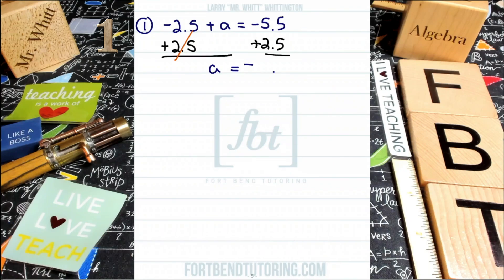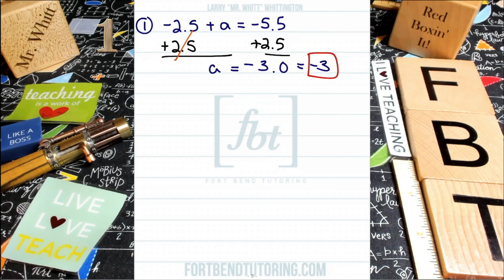And then you'll subtract. Line up your decimals because you're subtracting. And you'll have a 0 there and 5 minus 2. That just gives you a 3 and you'll end up with negative 3, which could be written as negative 3.0. There you go. There's the answer. Red box it. Well, that's one way to attack the problem. So let's see another way to tackle this.